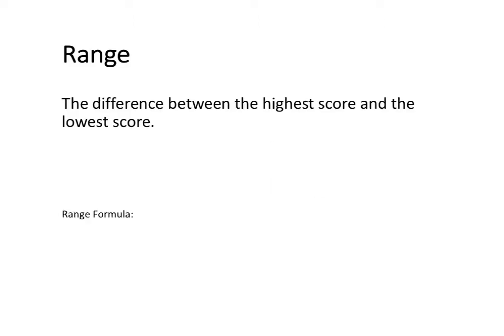Having a look at range first, the range is the difference between the highest score and the lowest score. You can use the formula: range is equal to the maximum score minus the minimum score, where x represents the score value.